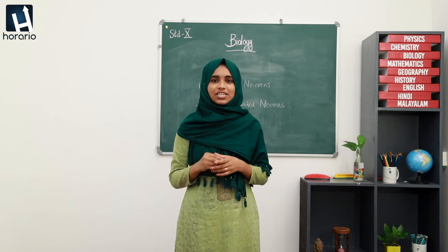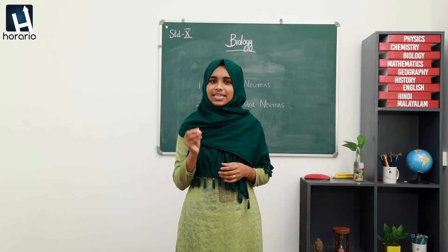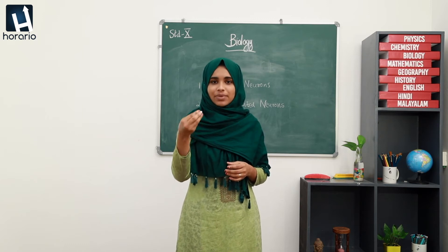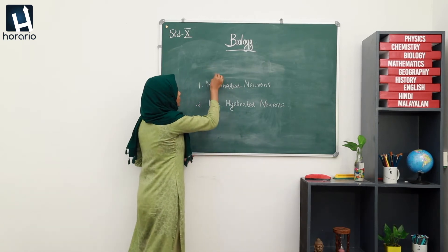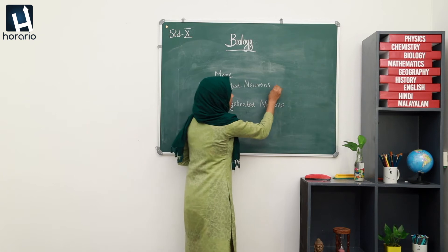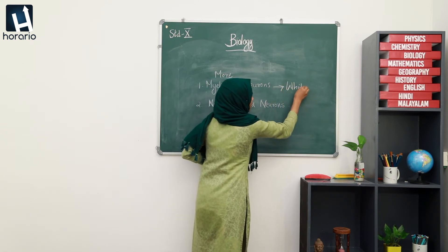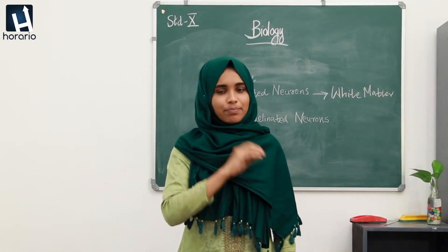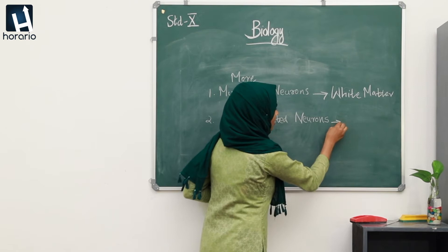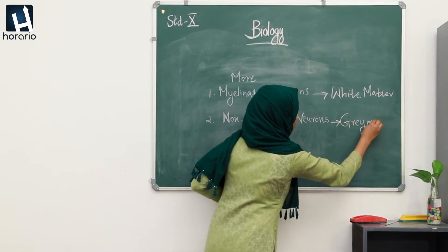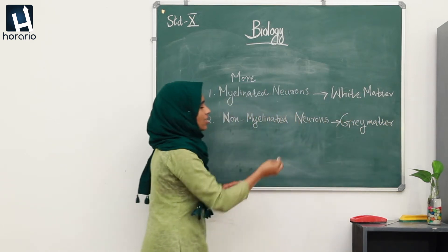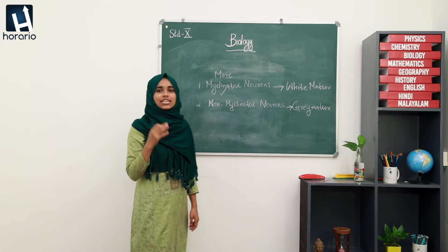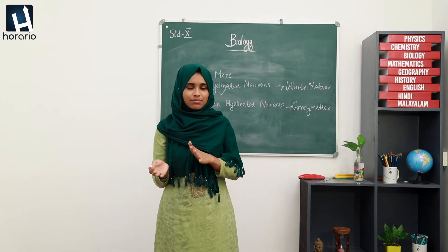You might have noticed that myelin sheath has a shiny white color. So the part of the brain and spinal cord where more myelinated neurons are present is called white matter. The part where non-myelinated neurons are present is called gray matter. White matter is rich in myelinated neurons, and in gray matter myelinated neurons are absent.